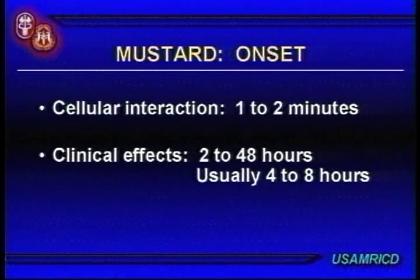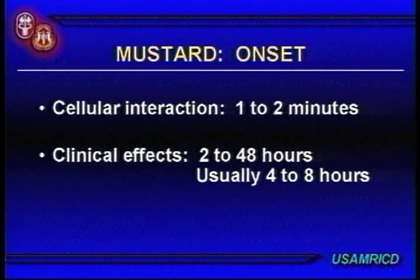Mustard's onset of effects has a latent period. It has been called radiomimetic — just like radiation effects, ultraviolet light, or some chemotherapeutic agents. You don't feel anything; you don't know you're being harmed at first. The onset is usually delayed from anywhere from two hours to two days, with an average of about four to eight hours.